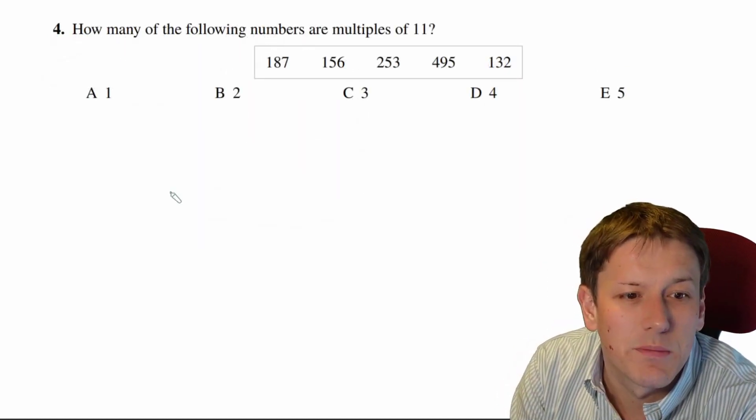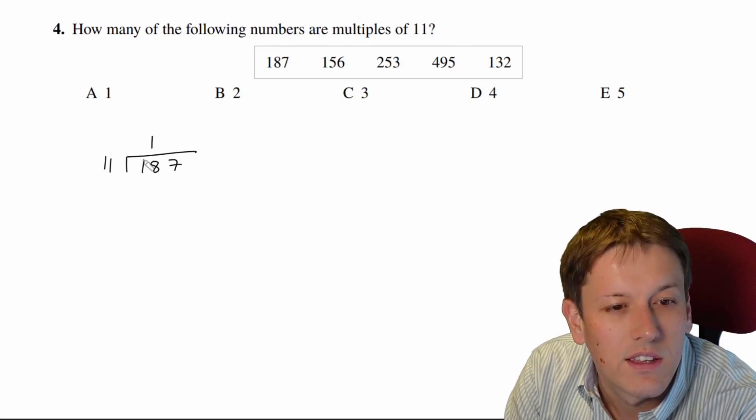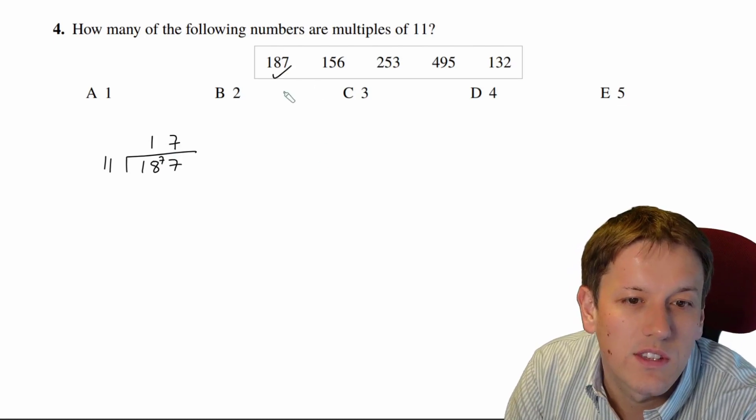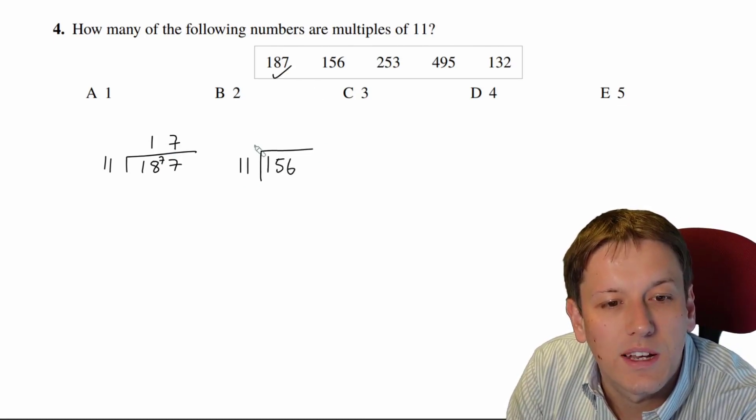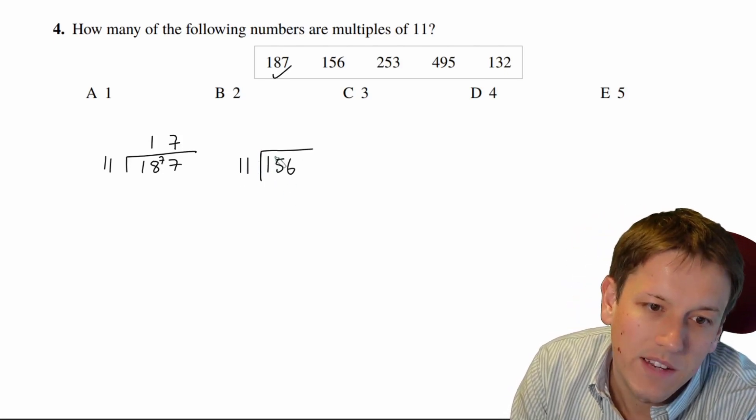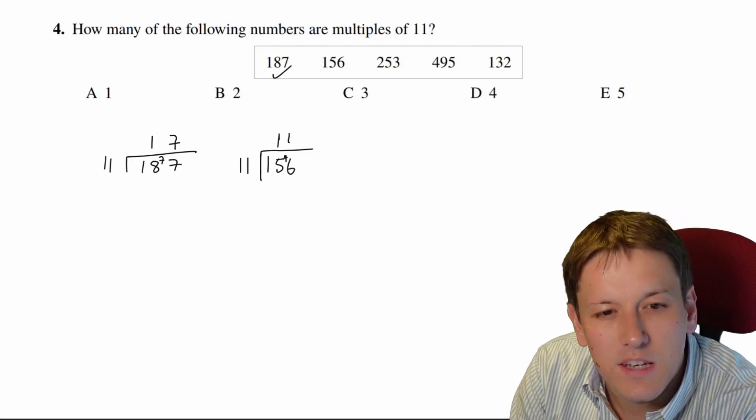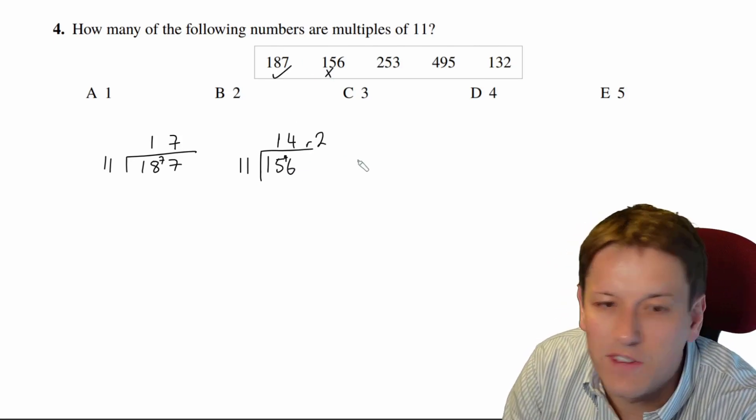So we're just going to check whether each of these are multiples of 11 by doing the division, so 11s into 187, that goes once with remainder 7, and then 11s into 77 goes 7 times, so that one does work, and you can probably see the others pretty quickly here. You might not actually want to write them all out to save yourself a bit of time. 11s into 15 will go once with 4 left over, and now this time I've got 4 but a remainder 2, because 11 times 4 is 44, so that one is not a multiple of 11.